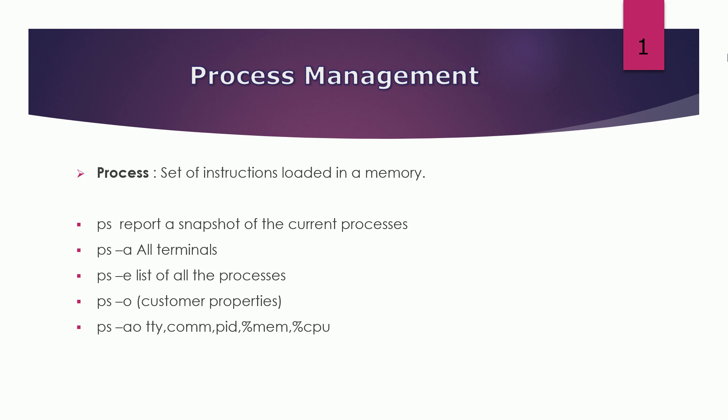Your operating system tracks processes through a unique ID number — that is called a process ID. Every process running on your system has a process ID, which is denoted by PID. PIDs eventually repeat because all possible numbers are used up. But we need to keep in mind that at any point of time, no two processes with the same PID exist in the system, because it is the PID that Linux or Unix uses to track each process.